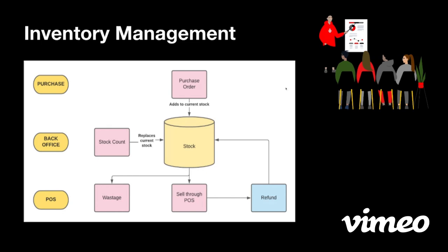When you do a refund, this will bring back the product into the stock. That's something quite important to know and to be cautious of. Because if you refund an item that cannot be resold — let's say I'm pouring a bottle of beer and I chose the wrong beer by mistake — I can't resell this pour, but I need to refund the item because the customer didn't want it. This will put the product back into the Lightspeed inventory, but I should make sure to record it as wastage as well. At the top, we can see that purchase orders add to the current stock. The Purchase module allows you to create purchase orders, send them to your suppliers, and then mark your deliveries as received when you get them, so your stock holdings increase.